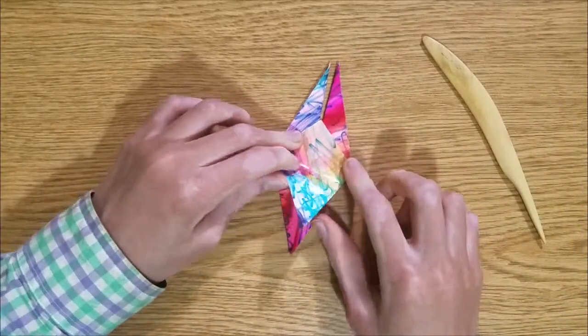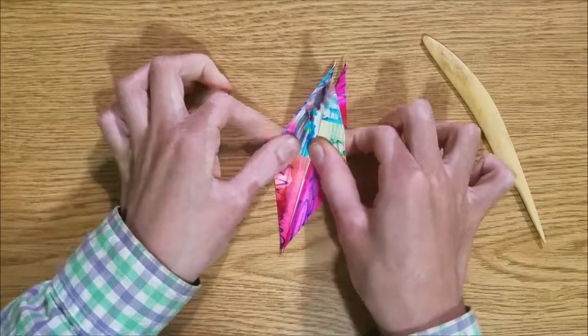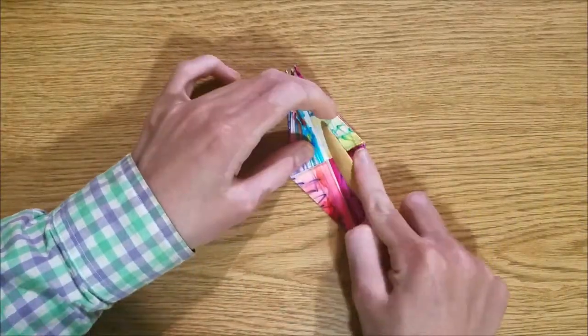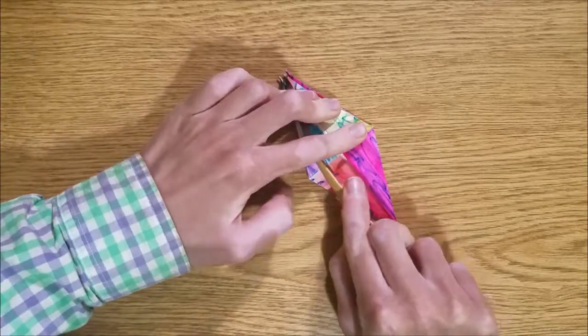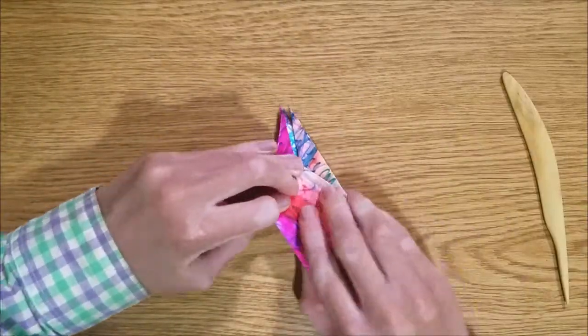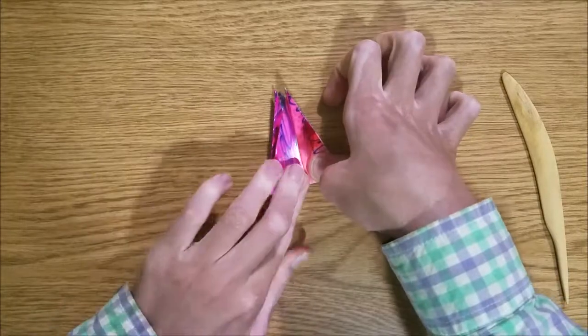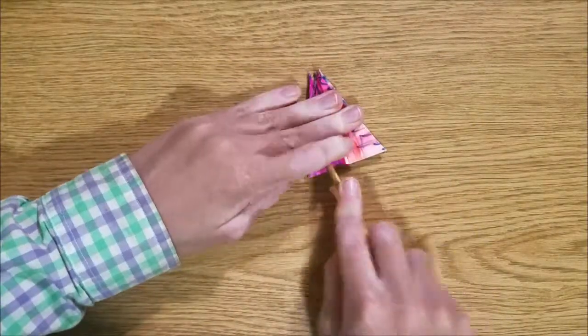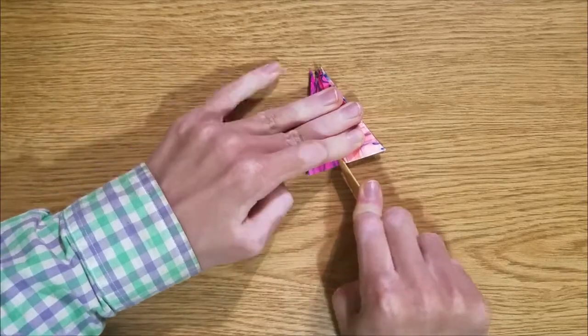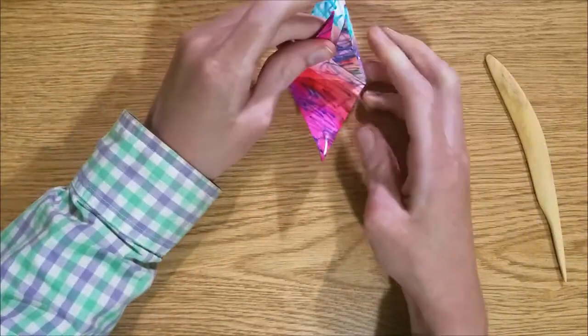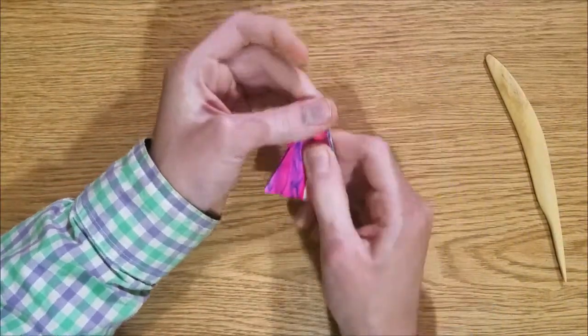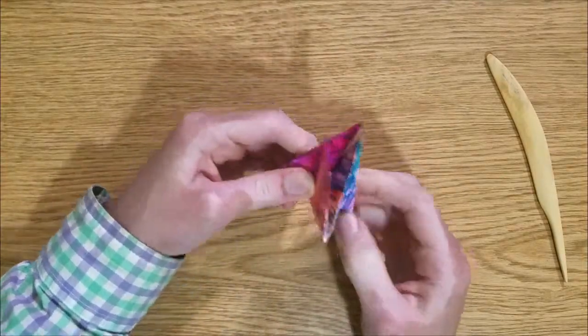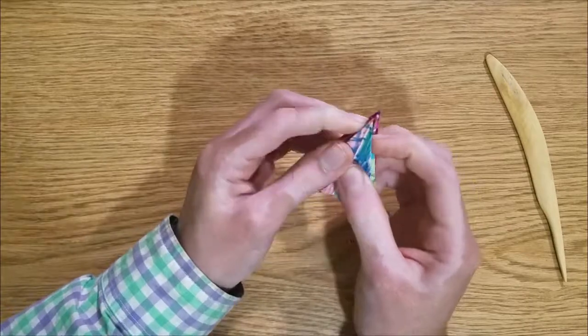Now we're going to fold this flap up, just like we did before. And this is where things will start to get 3D. I mean not flat. You know, you see how everything's flat right now. What we're going to do is spread it out and make an X again, just like last time.